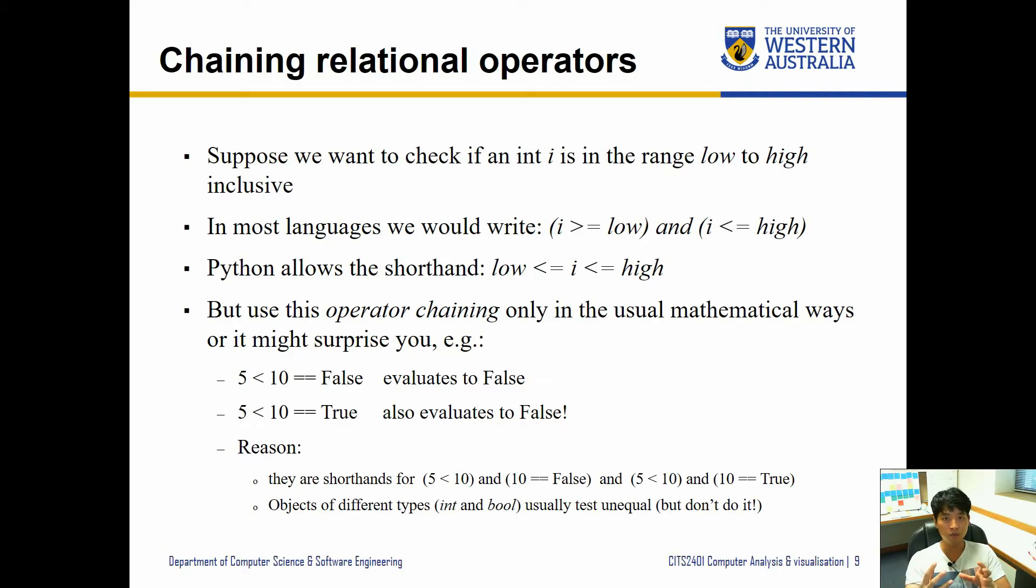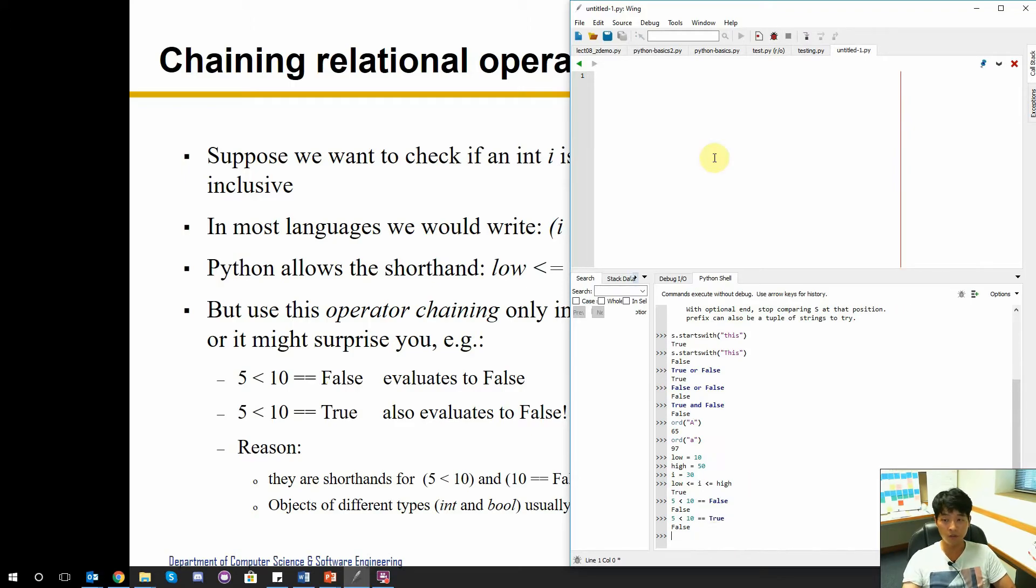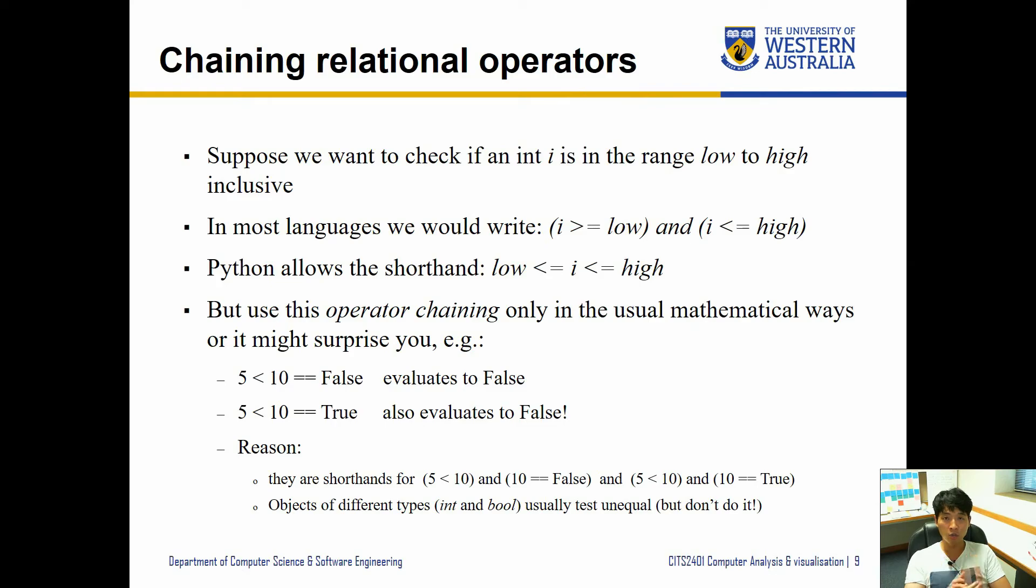But you should only use this in things like range checks or where it makes sense to put them in between, otherwise you might get strange behavior. For example, we have 5 less than 10 equal equal false. You may think that we're going to do this first and then compare it with false, but it's not necessarily the order you think it might happen. Even if you change this false to true, this will also result in false. Let's quickly check that.